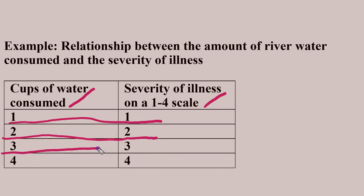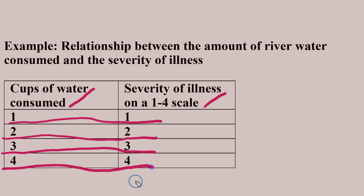Three cups of water consumed, the illness continues to increase. And at 4, the illness is at its maximum. The two conditions — drinking water and the illness — are varying together.